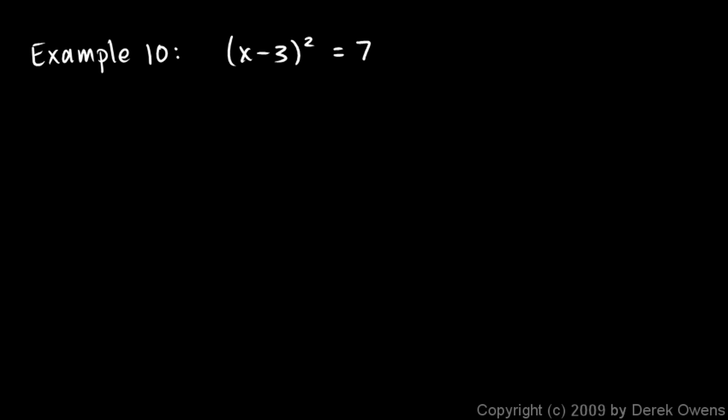We're continuing to work through some examples of simple quadratic equations, and all of these are examples that can be solved by taking the square root. What we see here is that sometimes our answers contain a radical and a number, and that's fine. We still use this same technique. We've got something squared, so we can solve it by taking the square root of each side.